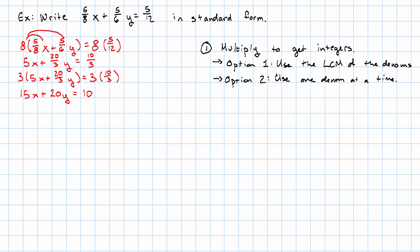So, now we have all integers. Now, we want to divide by the greatest common factor. Looking at this, I think it's easy to see that the greatest common factor of these numbers is 5. If that isn't obvious to you, you can absolutely use your calculator to find that.